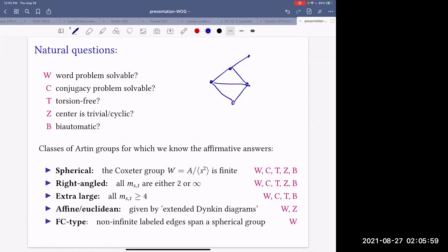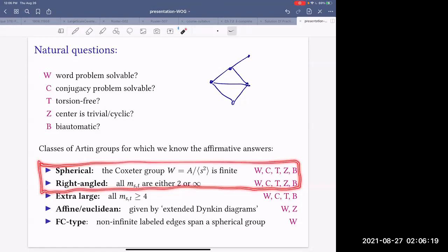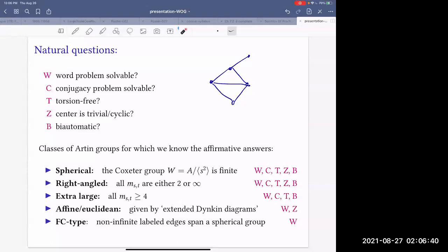But as we see these classes, we can say much fewer about them and we don't know, for example, how to solve conjugacy problem for affine Artin groups. And moreover, if we take an arbitrary Artin group where all edge labels are three, we don't know how to solve word problem. We don't know how to even tell if one Artin group is isomorphic to another.